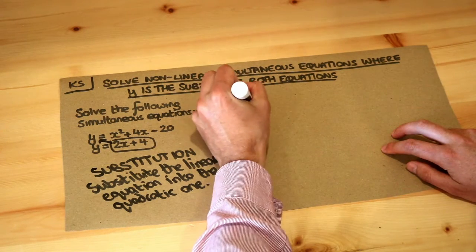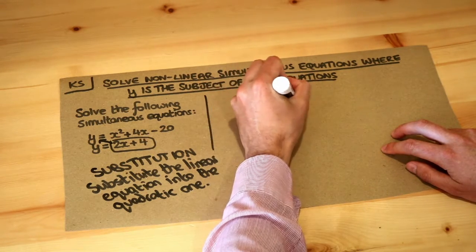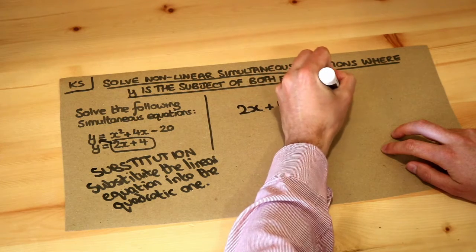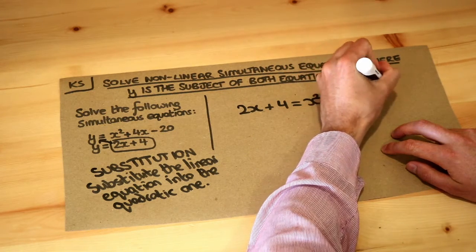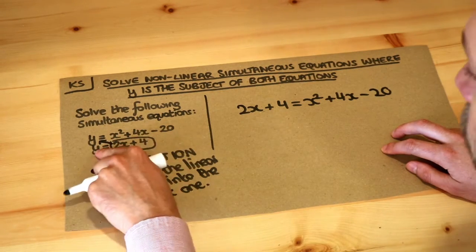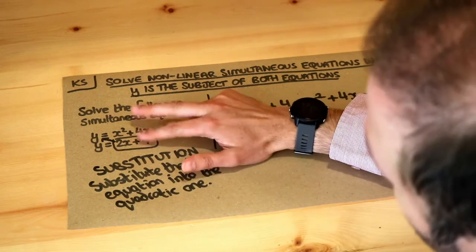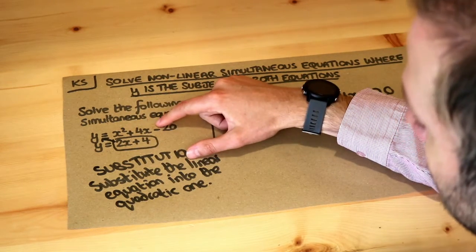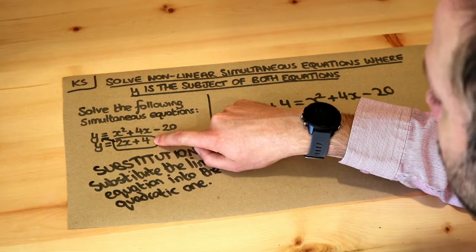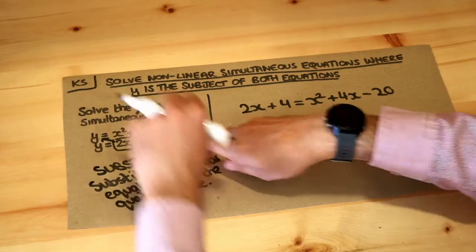So let's do that: 2x plus 4 is equal to x squared plus 4x minus 20. More generally, if you've got y equals something and then y equals something else, then you can just equate those two things. So the x squared plus 4x minus 20 is equal to the 2x plus 4 because y is equal to both of them.